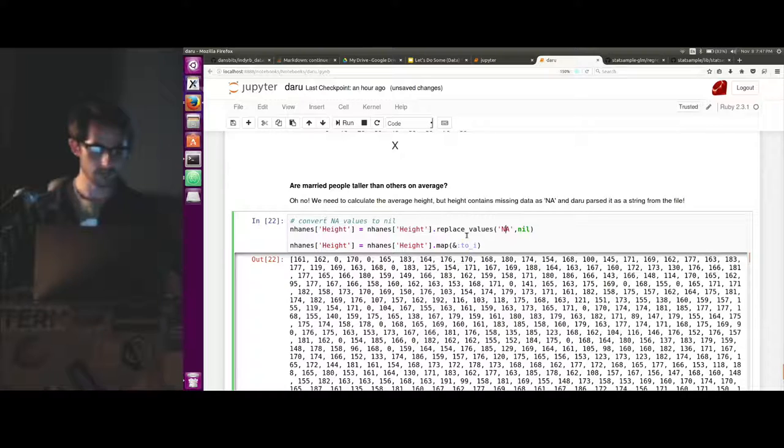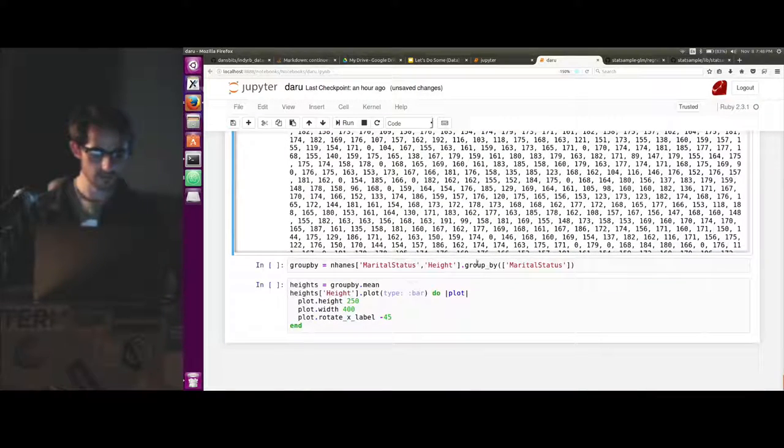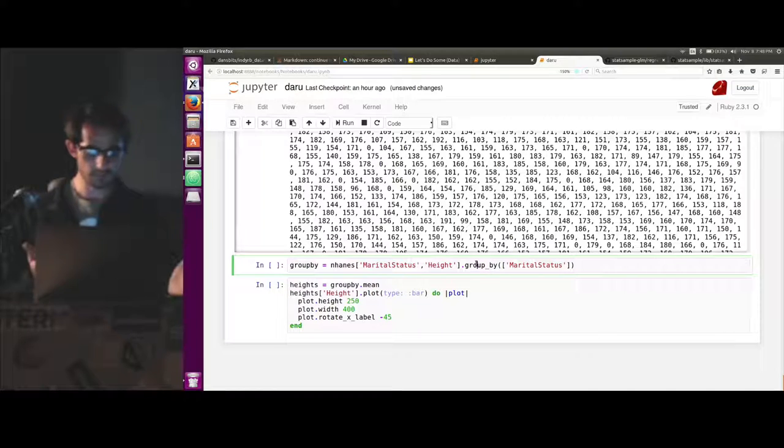So we replace all NAs with nil and then we can call map on our height and just call to_i. So we now have a bunch of integers.